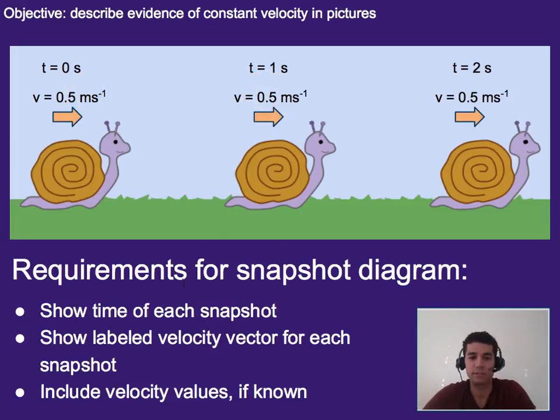So the three major things are: showing the time of each snapshot, showing the labeled velocity vector for each snapshot, and including the velocity values. It's important that you label this as a velocity vector, because later we're going to start using other vectors to describe motion as well, and we'll need to know what type of vector it is.